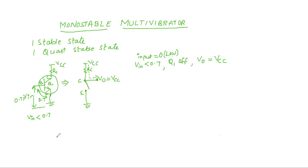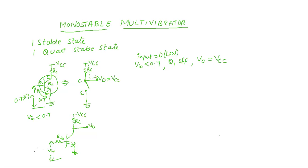Now if I apply more than 0.7, that is more than the cut-in voltage — I am taking the same transistor again. Here is VCC, the collector resistor, output collected across it, emitter terminal grounded, and base terminal connected to V input. Now I am applying V input greater than 0.7 — greater than the base-emitter cut-in voltage.